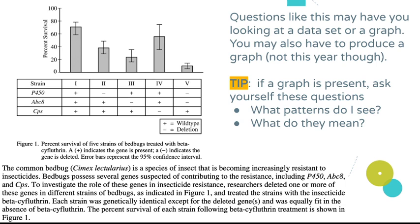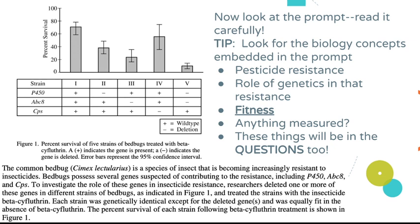A plus indicates presence of a gene; a minus indicates deletion. Error bars represent a 95% confidence interval — that's important. Before you even read the questions, look at the graph and chart and ask yourself: what patterns do I see, and what do those patterns mean? Chances are you're going to be asked to interpret those patterns.